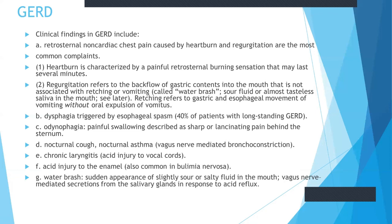Dysphagia is triggered by esophageal spasm. The person can also suffer from odynophagia. There is nocturnal cough and nocturnal asthma due to vagus nerve-mediated bronchoconstriction. There is also chronic laryngitis and, due to acid injury, injury to the inner nerve — also seen in bulimia nervosa when the patient is deliberately trying to vomit. Water brash is the sudden appearance of slightly sour or salty fluid in the mouth, caused by vagus nerve-mediated salivary gland secretion in response to acid reflux.